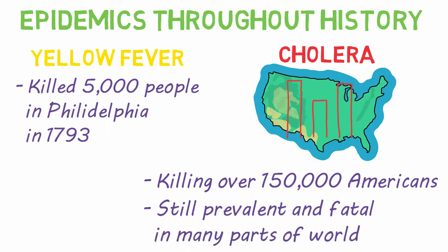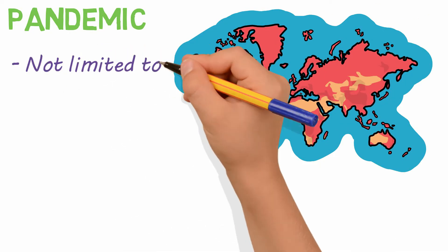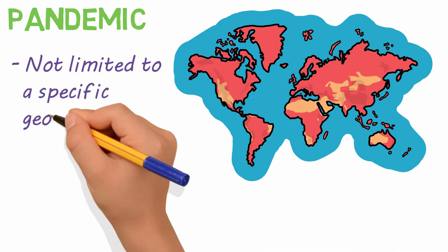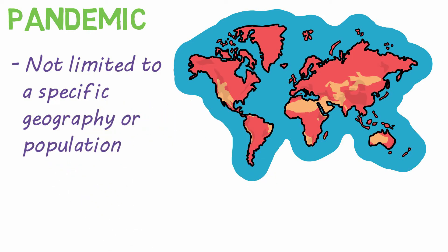An epidemic becomes a pandemic when it spreads across the globe. Essentially, a pandemic is not limited to a specific geography or population.